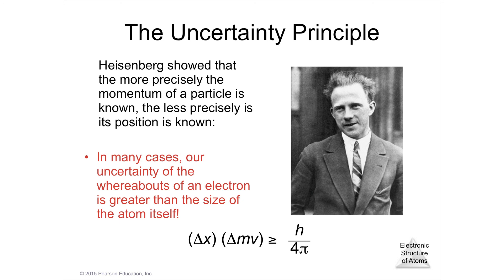His uncertainty principle is that we can't determine the exact position, direction of motion, and speed of a subatomic particle at the same time. For electrons in particular, we can't determine their momentum and their precision simultaneously.